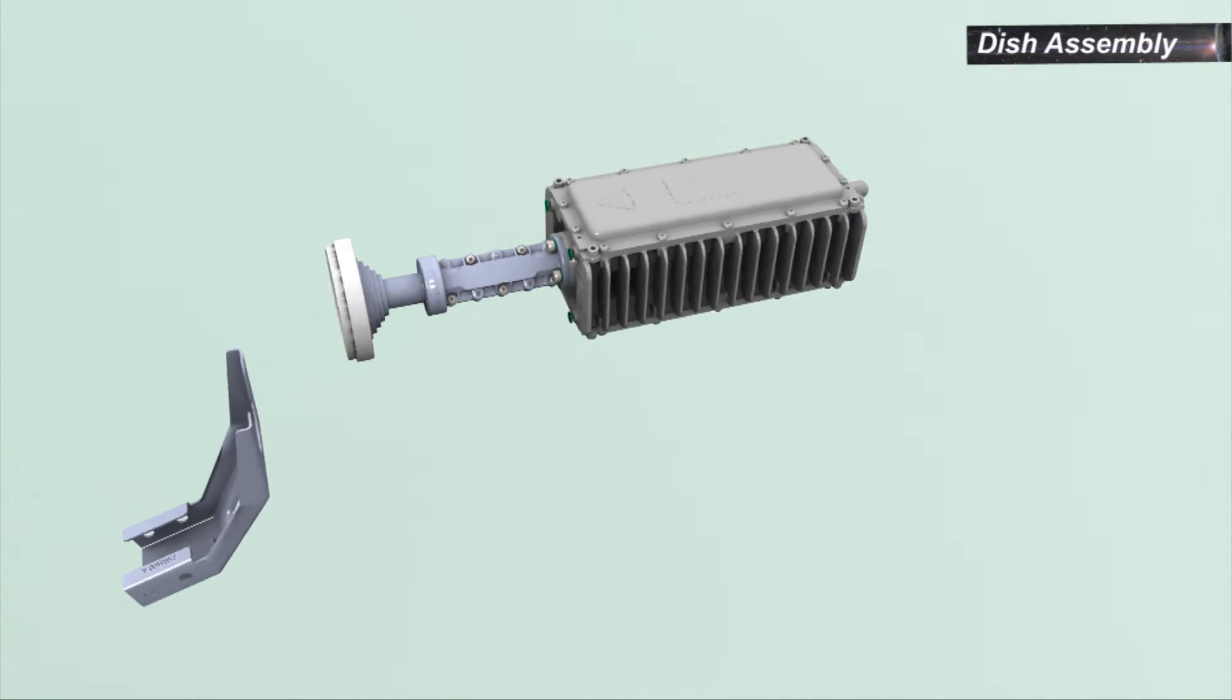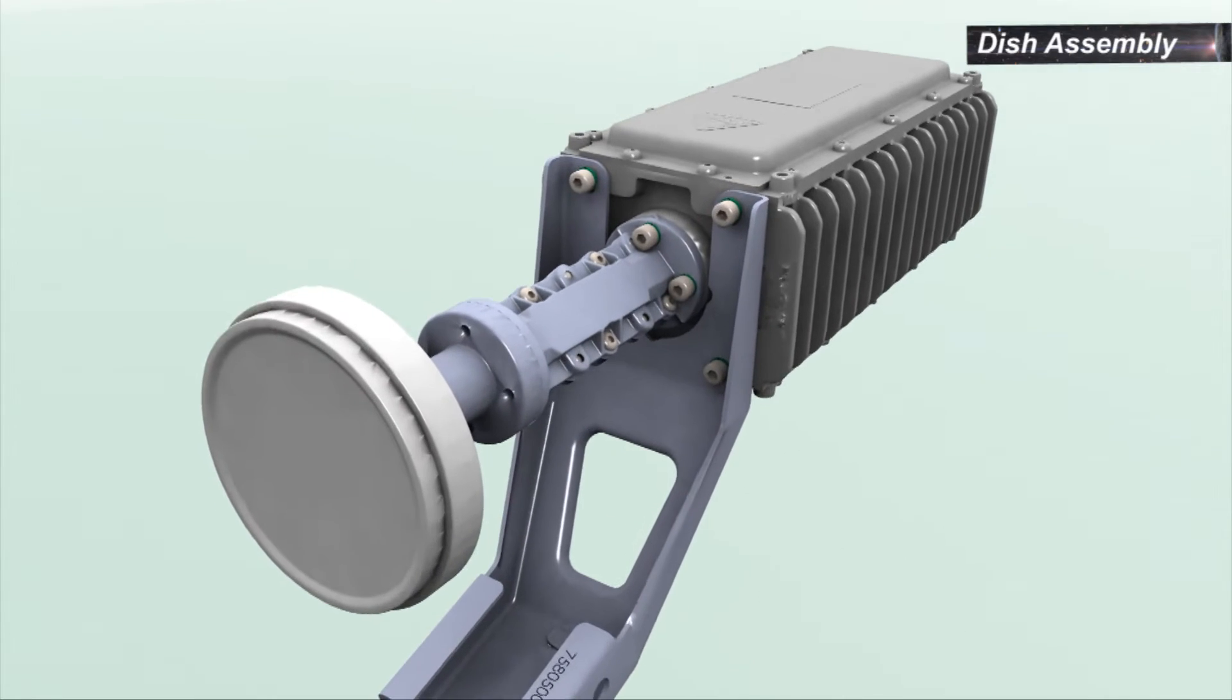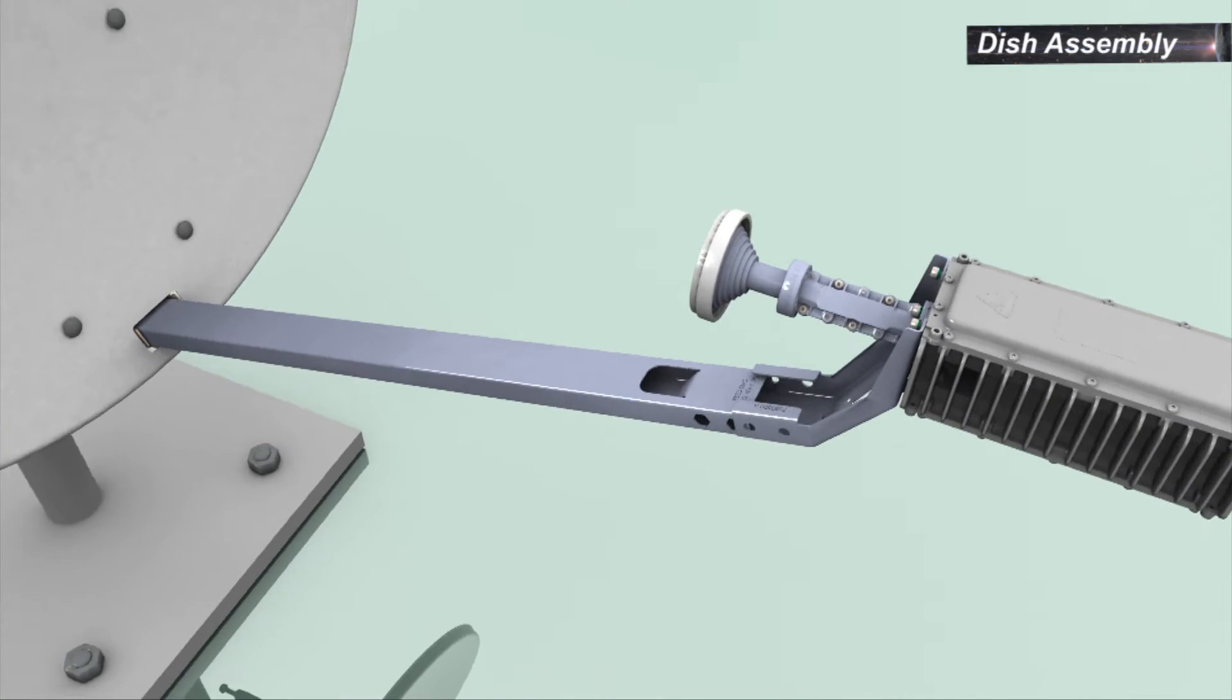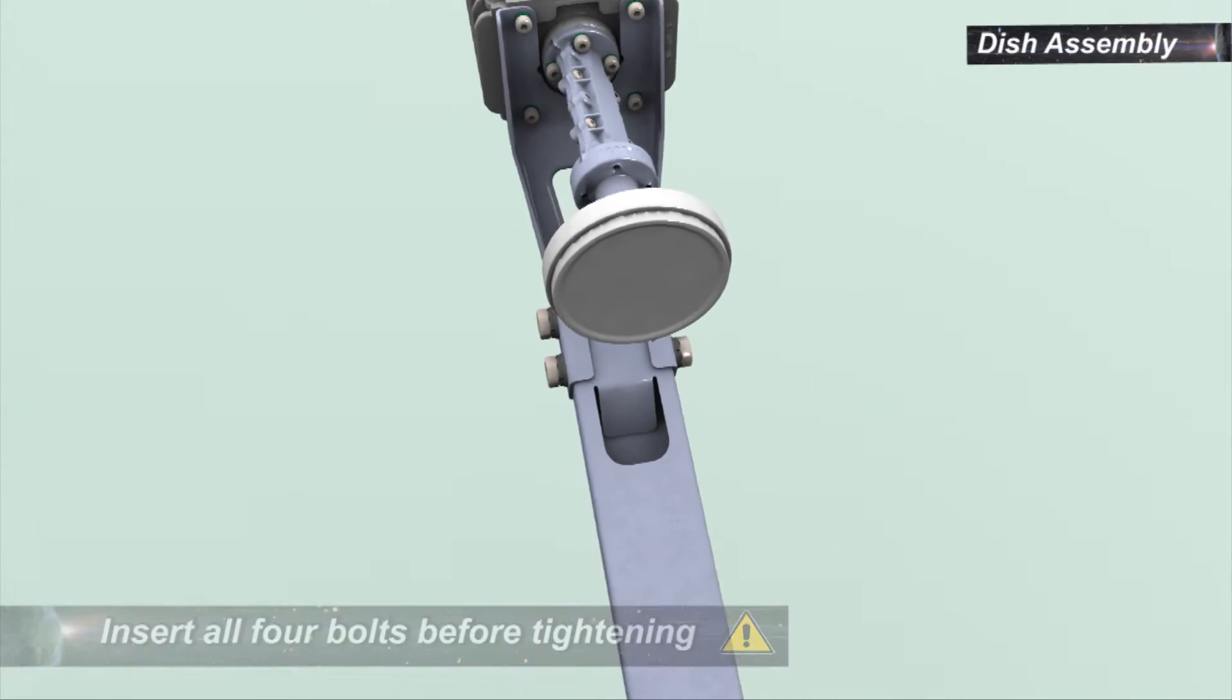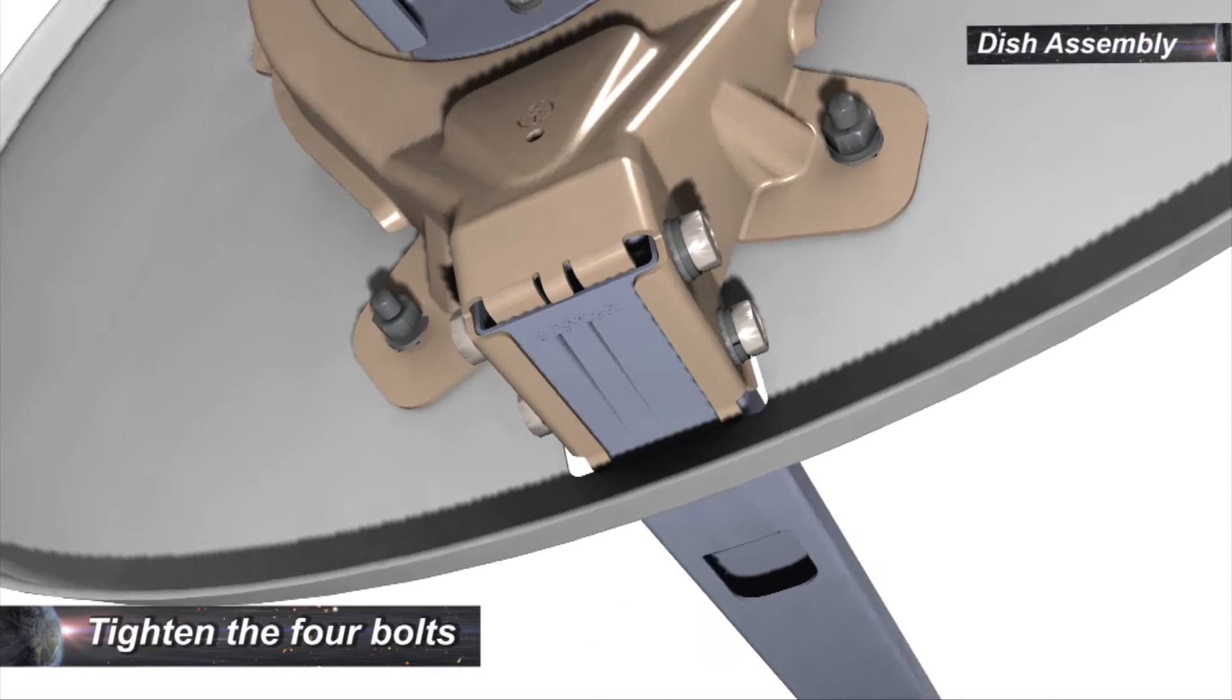To assemble the transceiver bracket and the transceiver, insert and tighten the four bolts. Fit the transceiver bracket on the front end of the boom arm. Insert and tighten the four bolts with flat washers and spring washers. Tighten the four bolts.